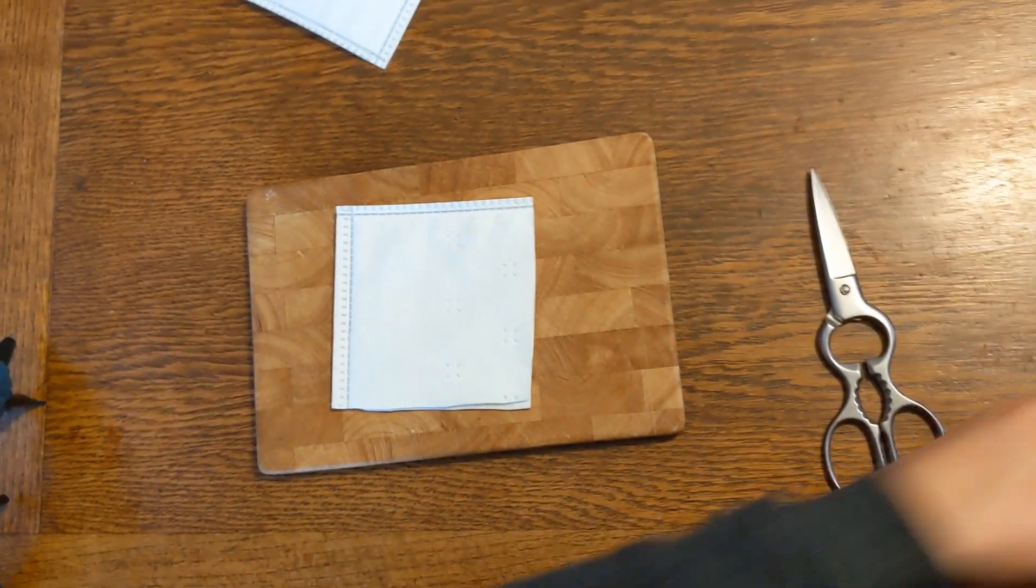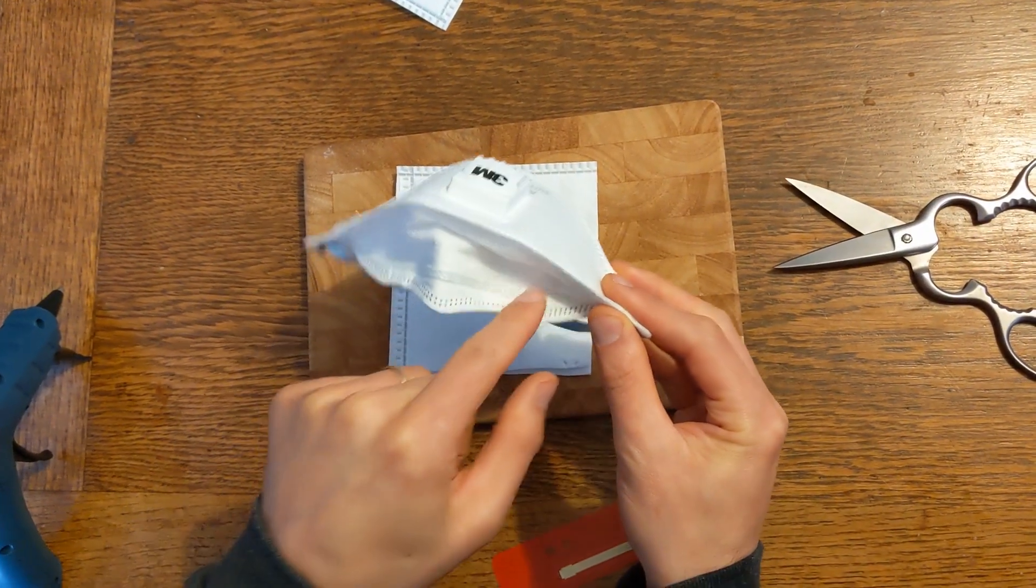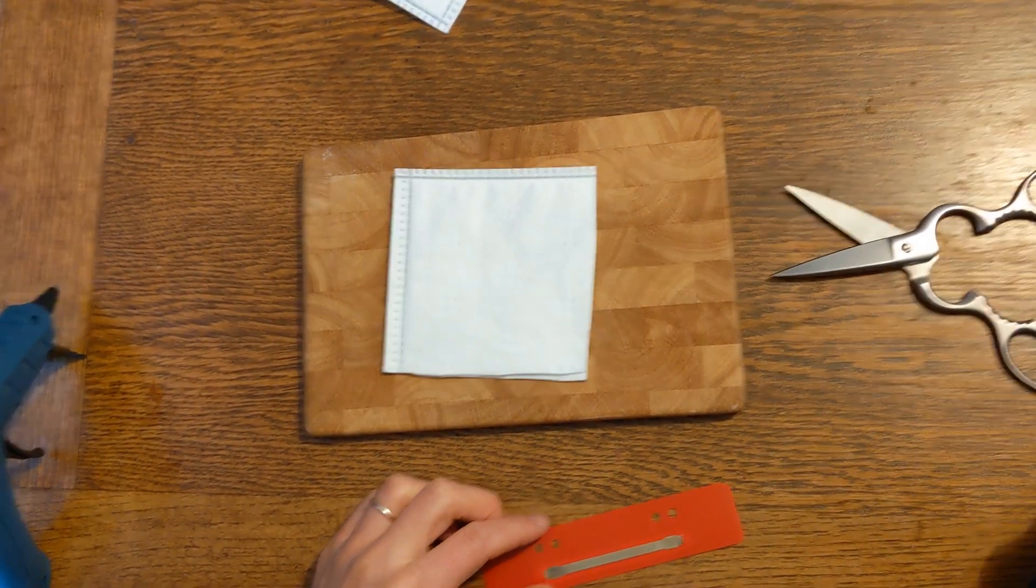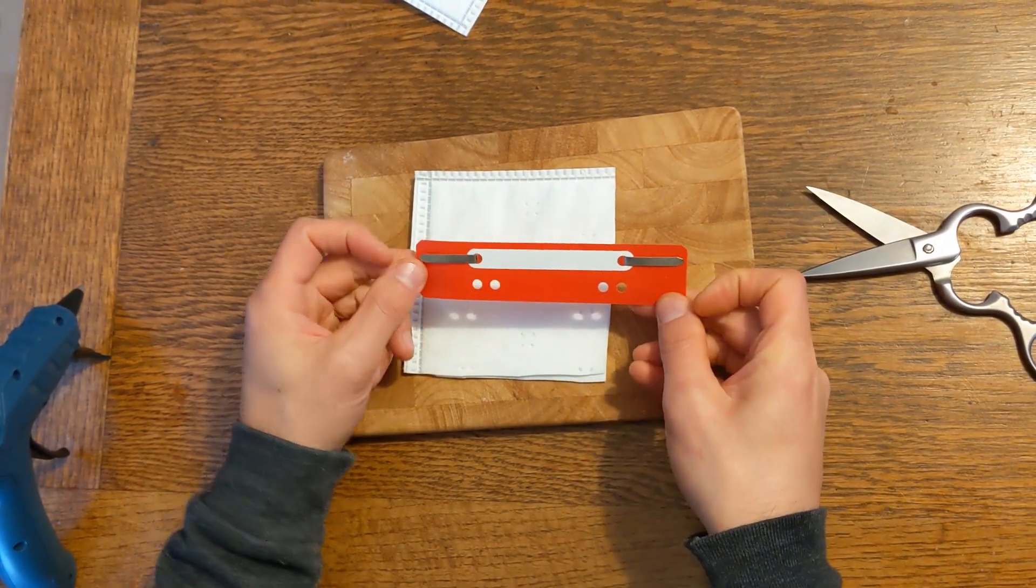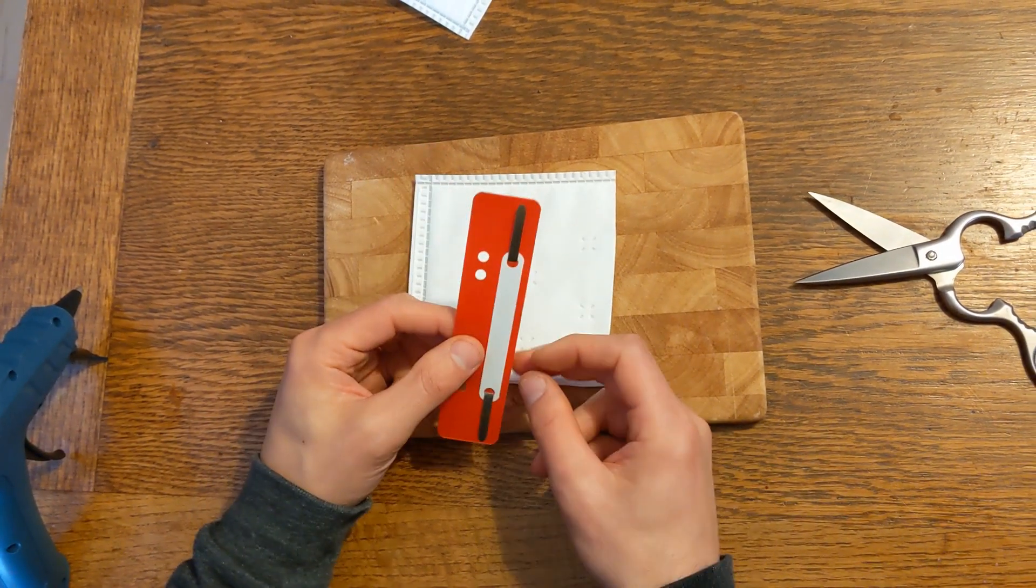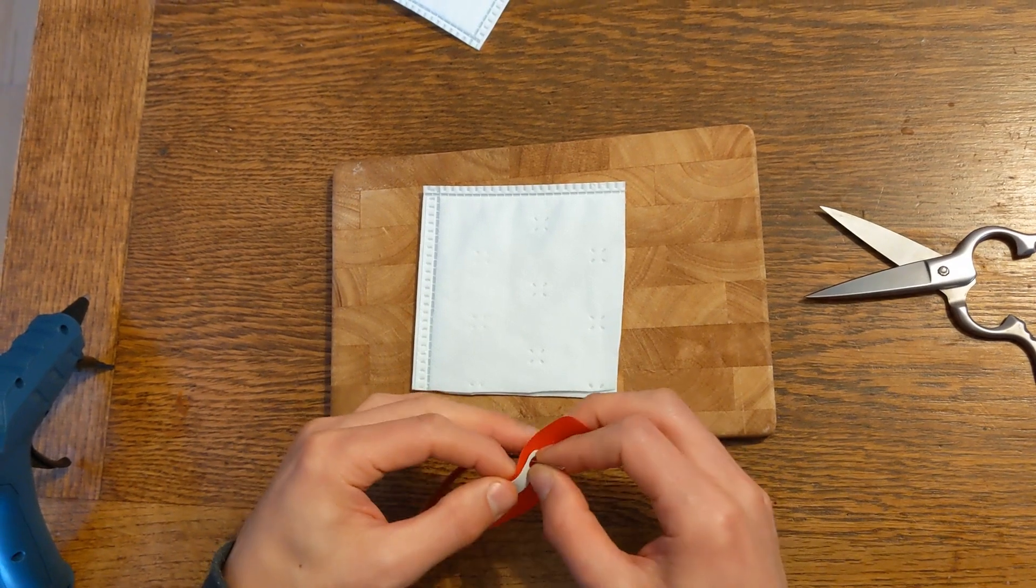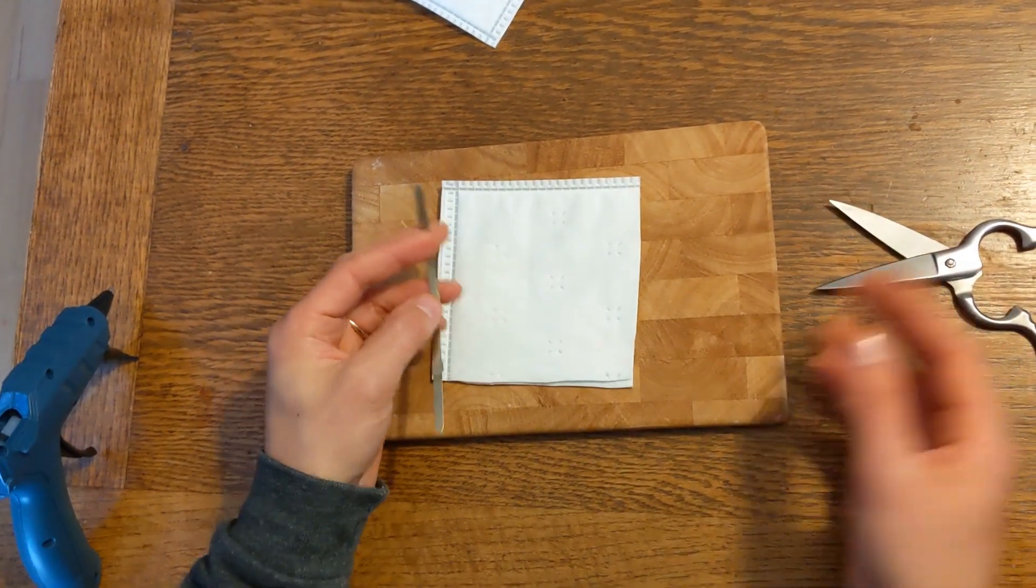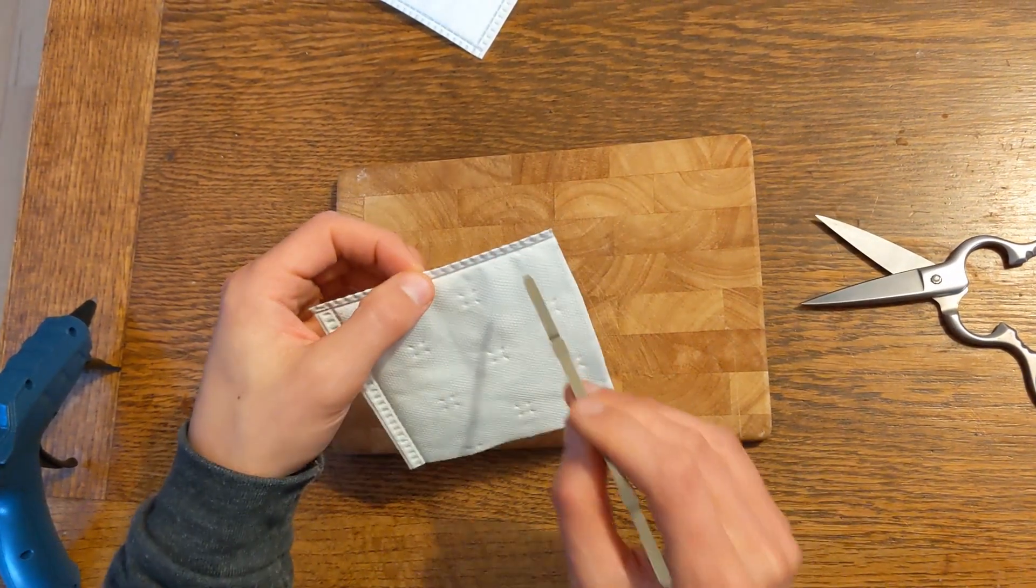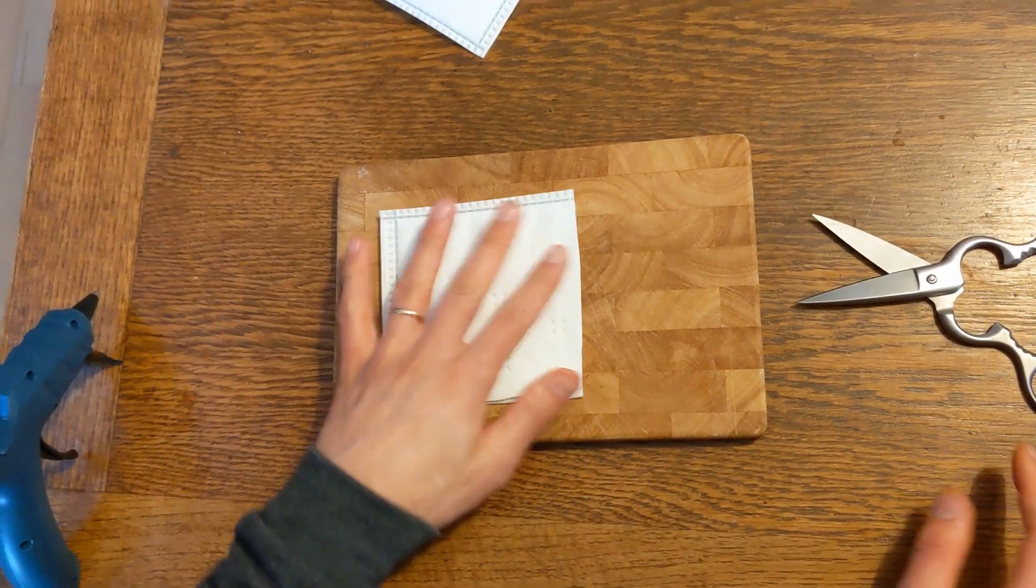The next thing is the nose bridge. The official mask over here has a strip of metal adapted to the shape of your nose. This thing over here, which is used to hold together bank statements is excellent for that. We're going to make a small incision and pass this metal strip through.